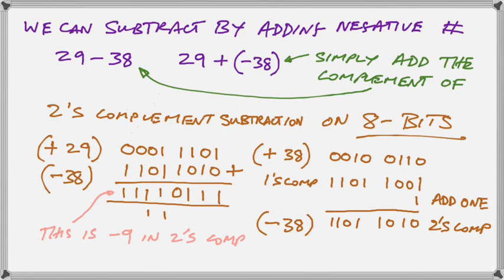Now if you don't realize that that's minus 9 in 2's complement, there's a quick trick. Just write that pattern down, complement it, and add 1, and you will be back to positive 9.